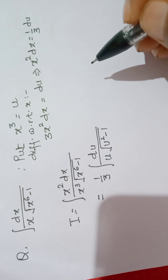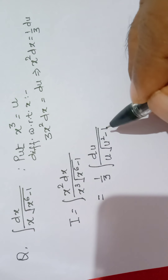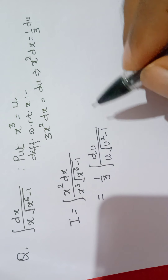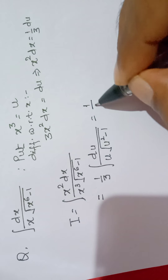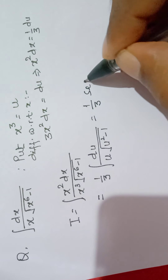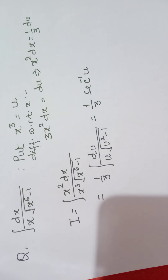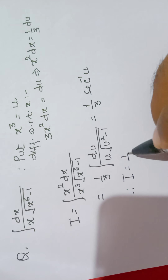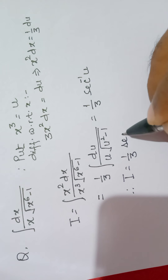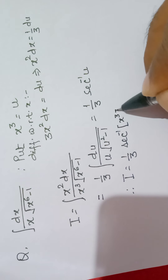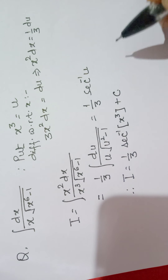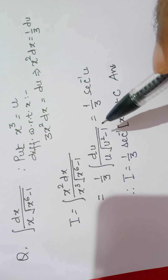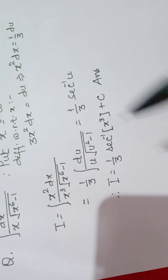We have 1 by 3 du upon u into under root u squared minus 1. The integration of 1 upon u·√(u²−1) gives sec inverse u by the known formula. Now writing back the value of u = x³, the result is 1 by 3 sec inverse x³ plus constant. In this way we differentiate the terms.